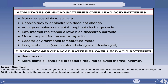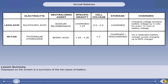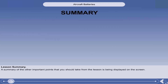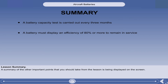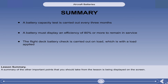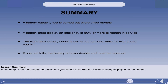Spend a moment studying the comparison table, then move on when you are ready. Displayed on the screen is a summary of the two types of battery. Here are the other important points you should take from the lesson: a battery capacity test is carried out every three months; a battery must display an efficiency of 80% or more to remain in service; the flight deck battery check is carried out on load, which is with the load applied; and if one cell fails, the battery is unserviceable and must be replaced.